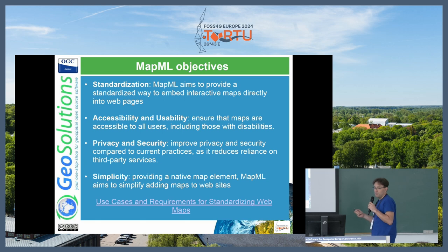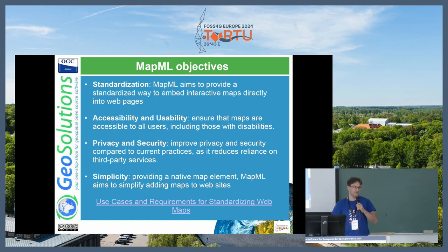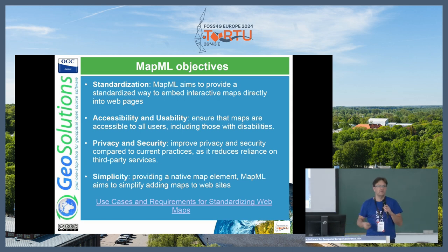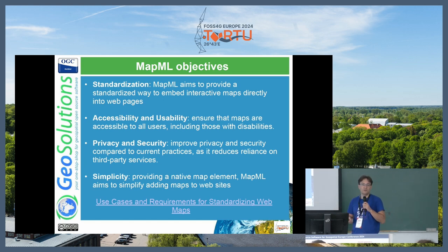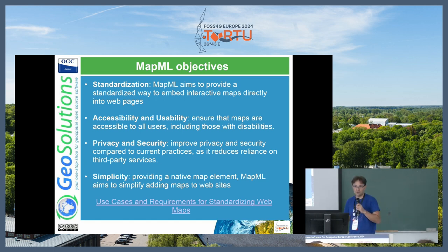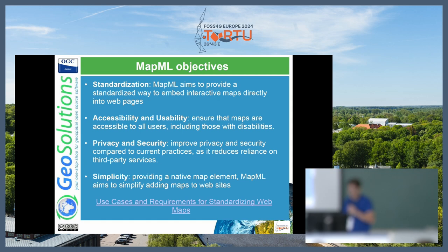The objectives: provide a standardized way to embed interactive maps directly into web pages — for simple maps, not for something as sophisticated as map store with all tools and controls and filters and ability to edit, download, restyle, and so on. Simple map in a simple way. Accessibility and usability first — this is important, at least for any public usage of simple maps. Ensure that the maps are accessible to all users including those with disabilities, and it should be very simple to embed a map in a page.